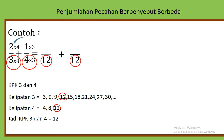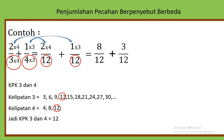Oke, 2 kali 4 kita letakkan di sini, dan 1 kali 3 kita letakkan di sini. Hasilnya adalah 8 per 12 ditambah 3 per 12. Hasilnya adalah 8 ditambah 3, yaitu 11 per 12.